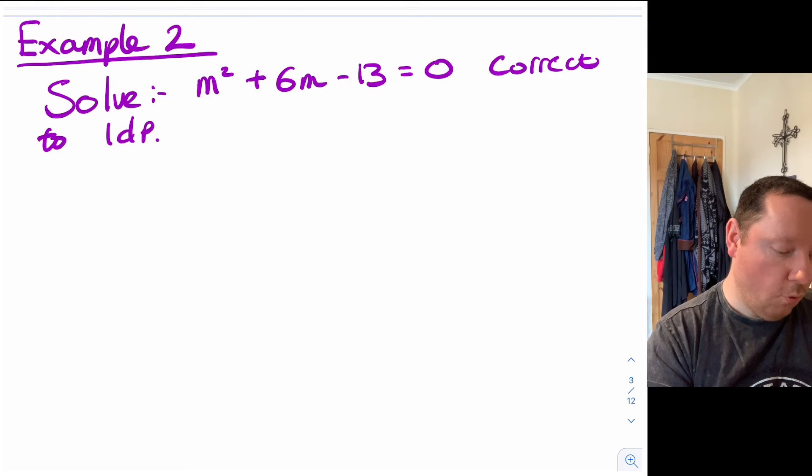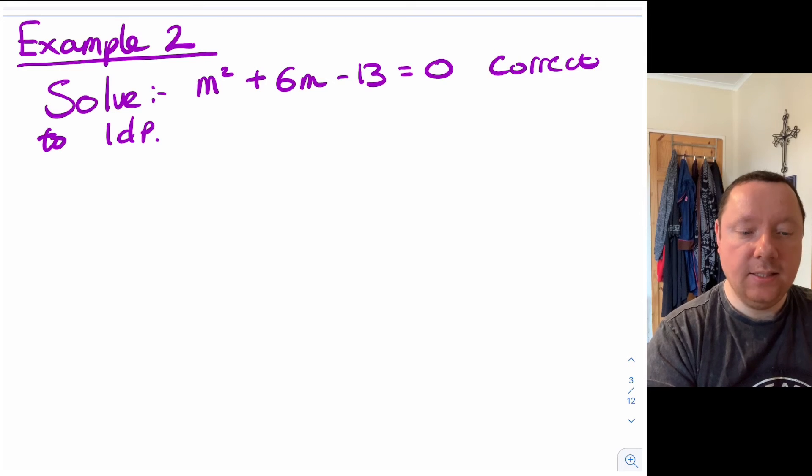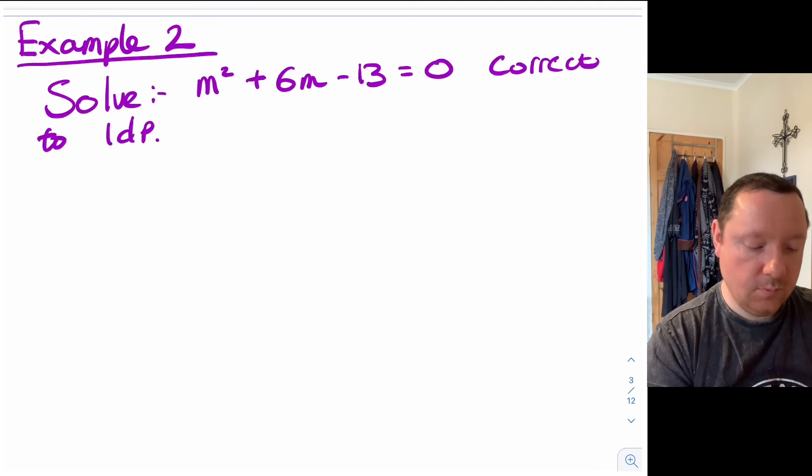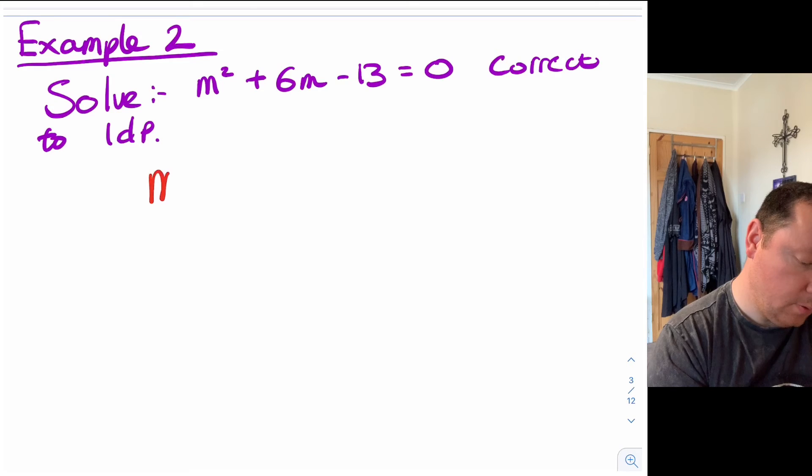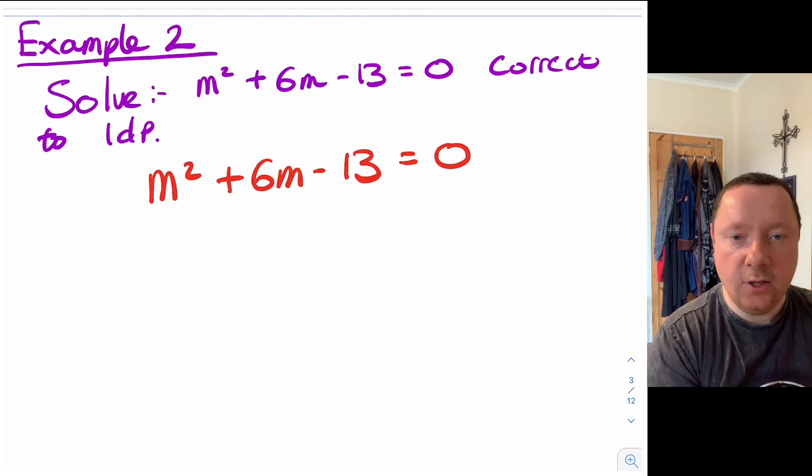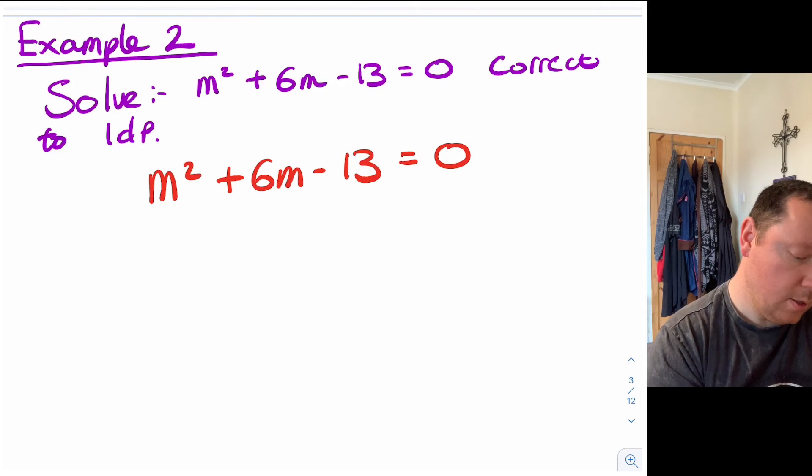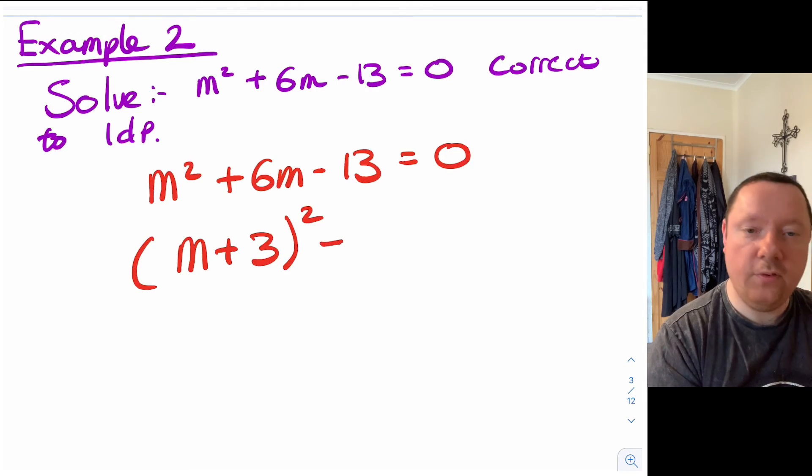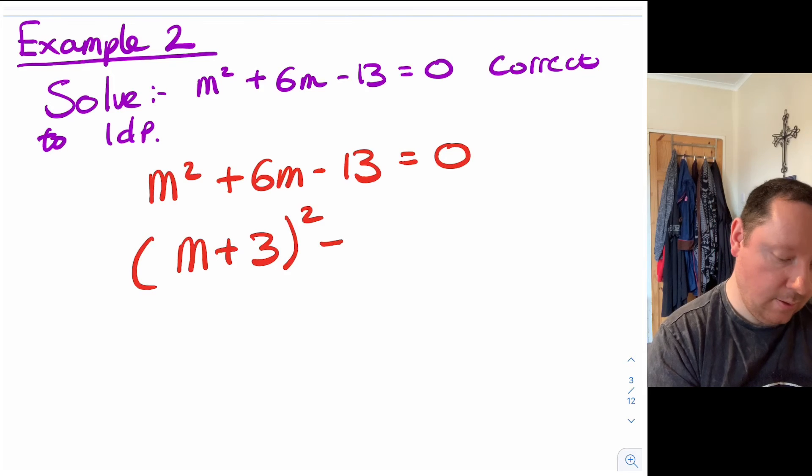Example two. Solve m squared plus 6m minus 13 equals zero correct to one decimal place. It's not told us to use complete the square here but we're using complete the square. So m squared plus 6m minus 13 equals zero. Step one: complete the square - you would maybe check you could factorize it first and notice you can't do that. So we'll do m add 3, remember half of 6 is 3 squared. Immediately take off 3 squared so take away 9 and still take away 13 and that equals zero.